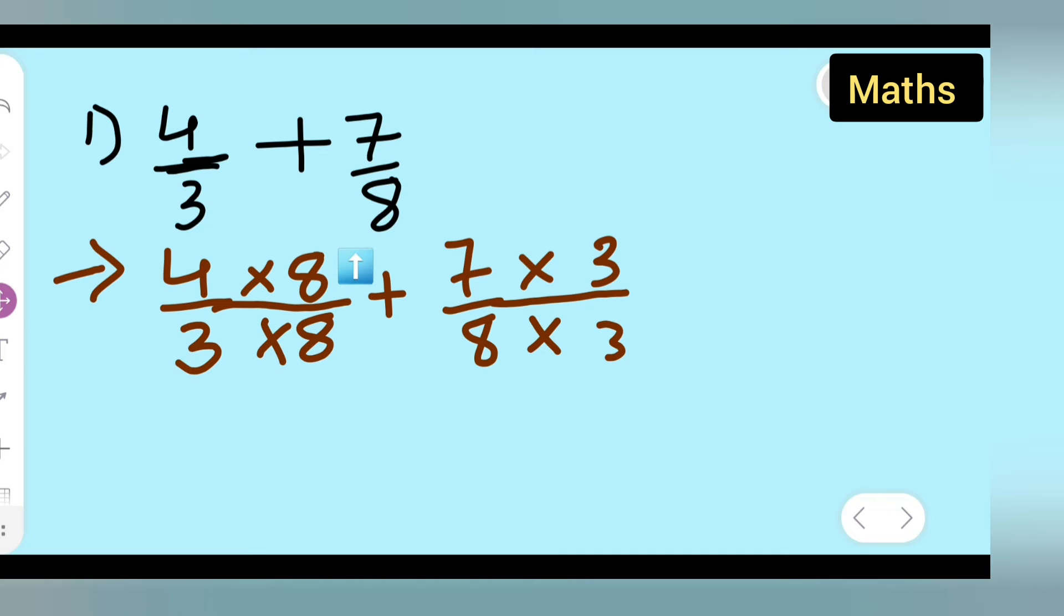Now 4 times 8 is 32, so you can write 32 upon... now 3 times 8 is 24. Then plus. Now 3 times 7 is 21, so write 21 upon... 8 times 3 is again 24. So you can write this as 32 plus 21 upon 24.